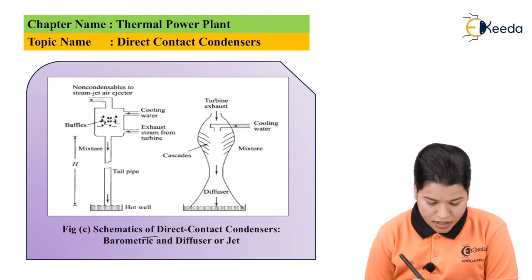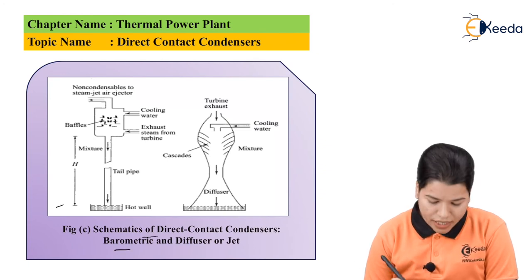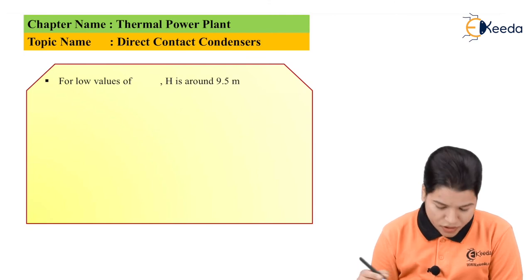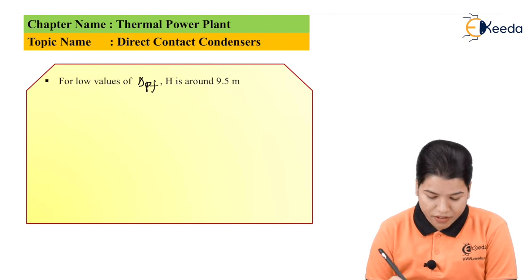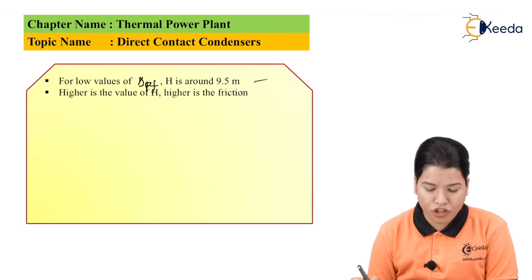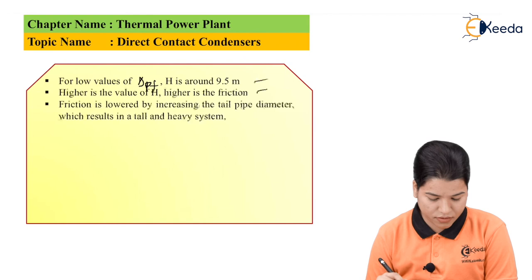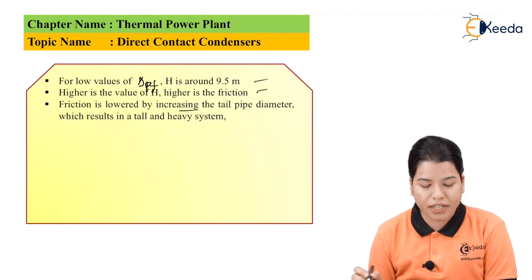For low values of delta_pf, the tail pipe height h is around 9.5 meters. A higher value of h corresponds to a higher value of friction. The friction can be lowered by increasing the tail pipe diameter, which results in a tall and heavy system.